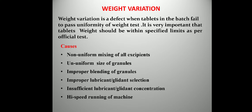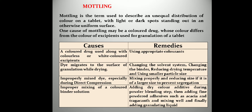Causes of weight variation include: non-uniform mixing of excipients; non-uniform size of granules leading to segregation; improper blending of granules; fines giving more weight than larger granules; improper lubricant or glidant selection or insufficient concentration, which affects flow of granules from hopper to compression station; and high speed of the tableting machine.